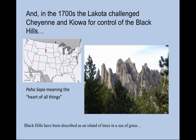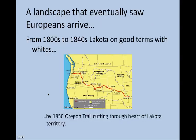By the 1700s, the Lakota had come to challenge other prairie peoples such as the Cheyenne and the Kiowa for control of the Black Hills — a very fascinating sub-region of the prairies, a kind of oasis, an island of towering granite bluffs and pine-studded knolls. The Black Hills have been described as 'an island of trees in a sea of grass,' sitting separate and apart from the larger continental western divide of the Rocky Mountains. The Black Hills have been sacred to Native American peoples for a long time, and to the Lakota they were known as the Paha Sapa — the heart of all things.